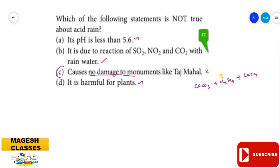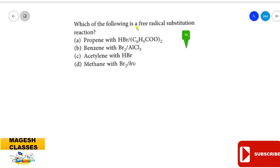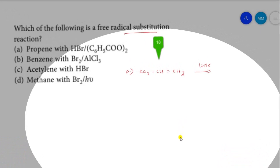Question 18: Which of the following is a free radical substitution reaction? Option A: propene (CH₃CH=CH₂) reacts with HBr in the presence of benzoyl peroxide radical. Despite the radical initiator, the presence of a double bond means it undergoes an addition reaction. Option B: benzene reacts with bromine in the presence of AlCl₃ — this is electrophilic substitution.